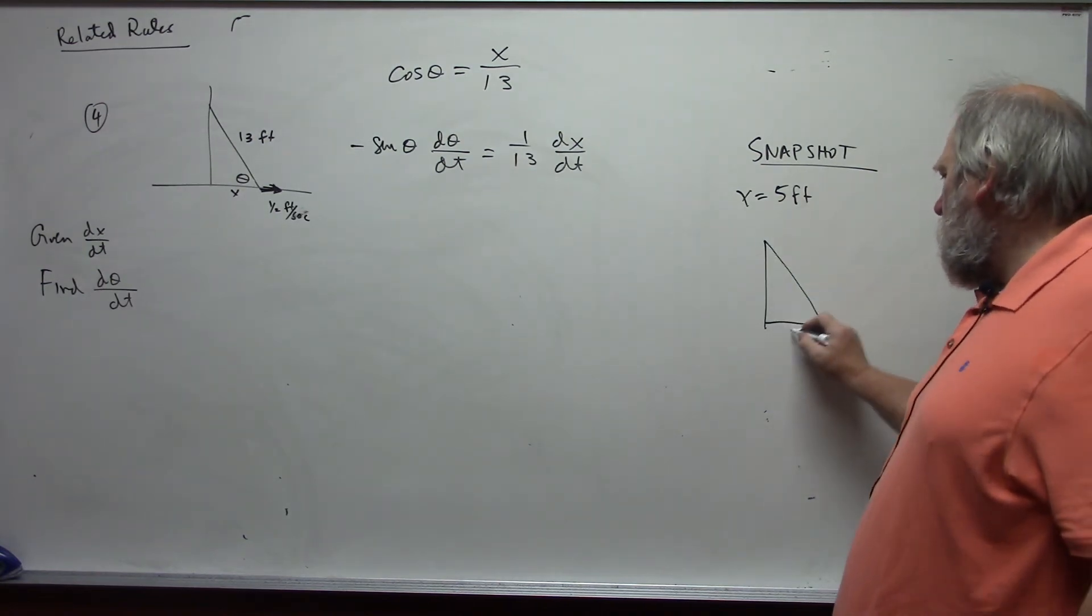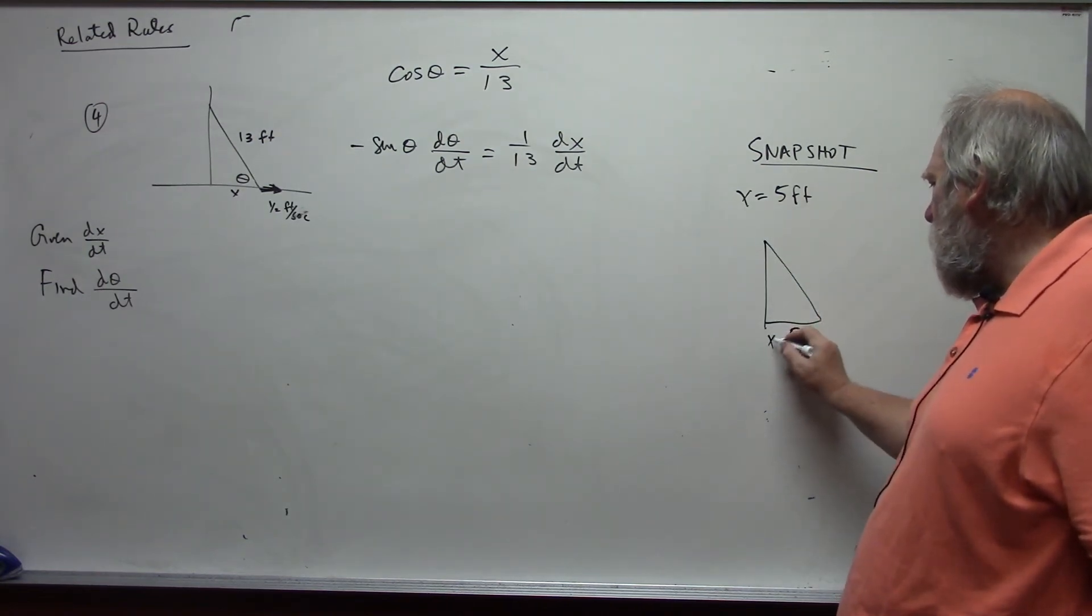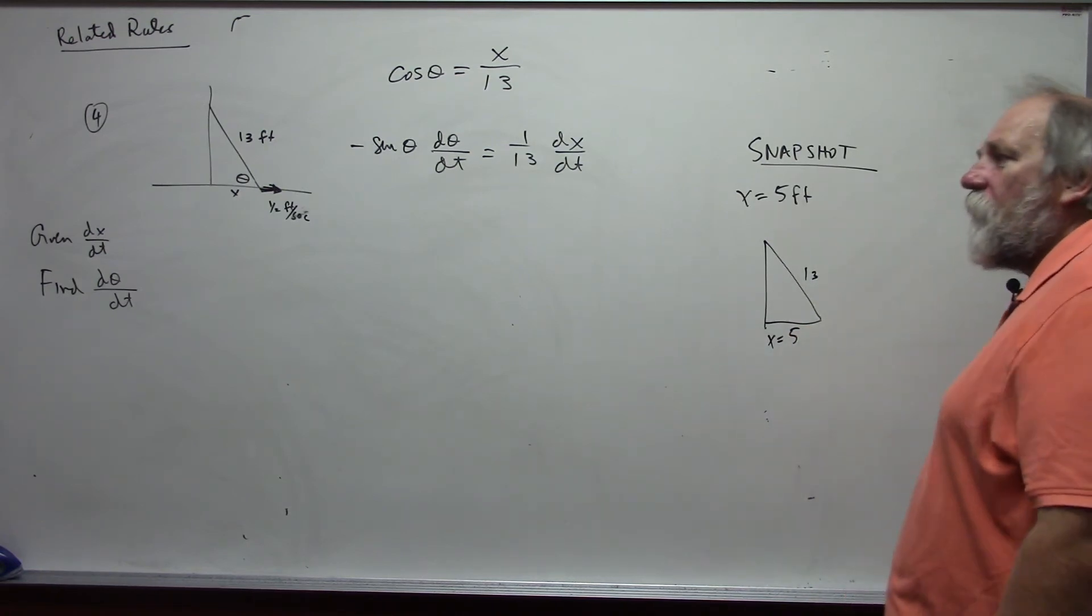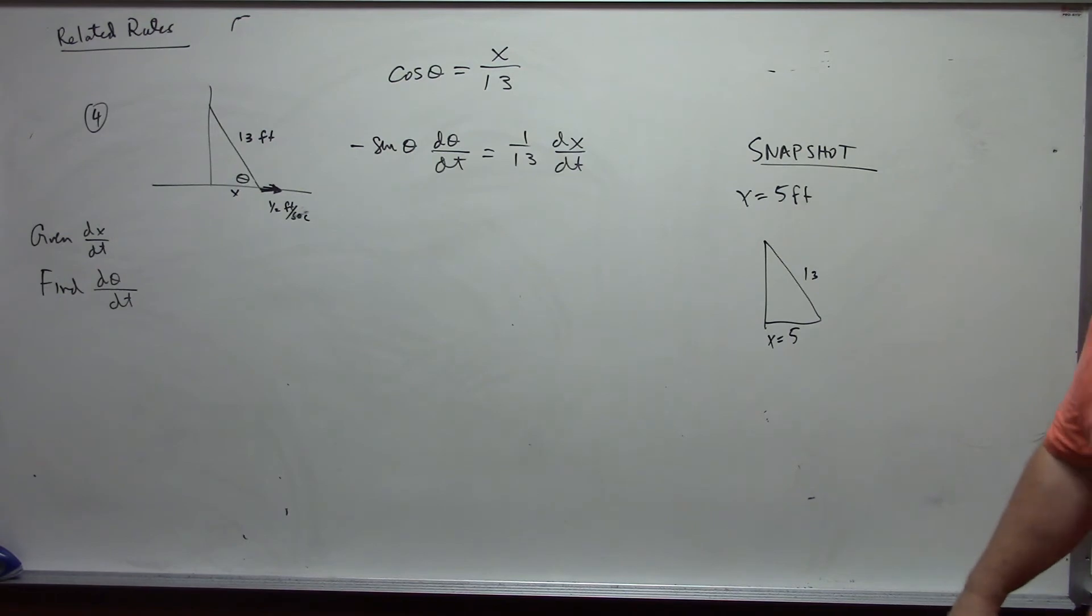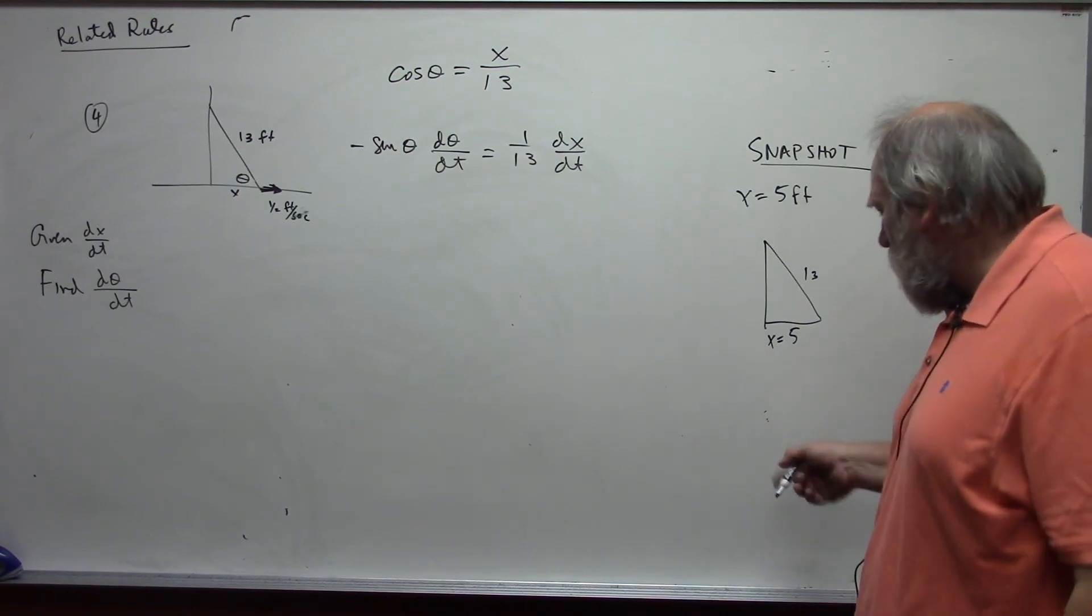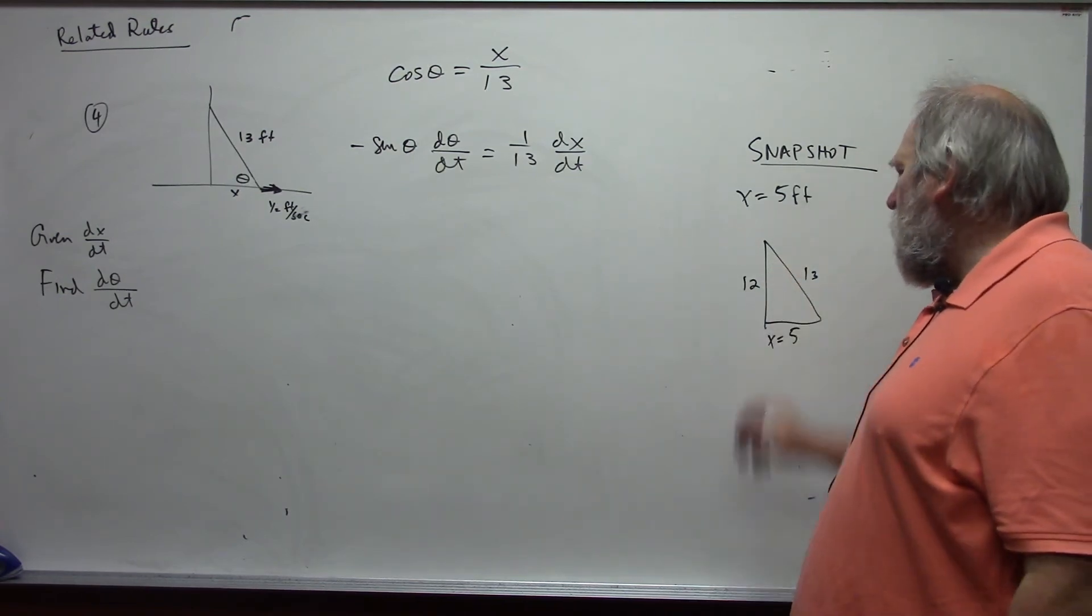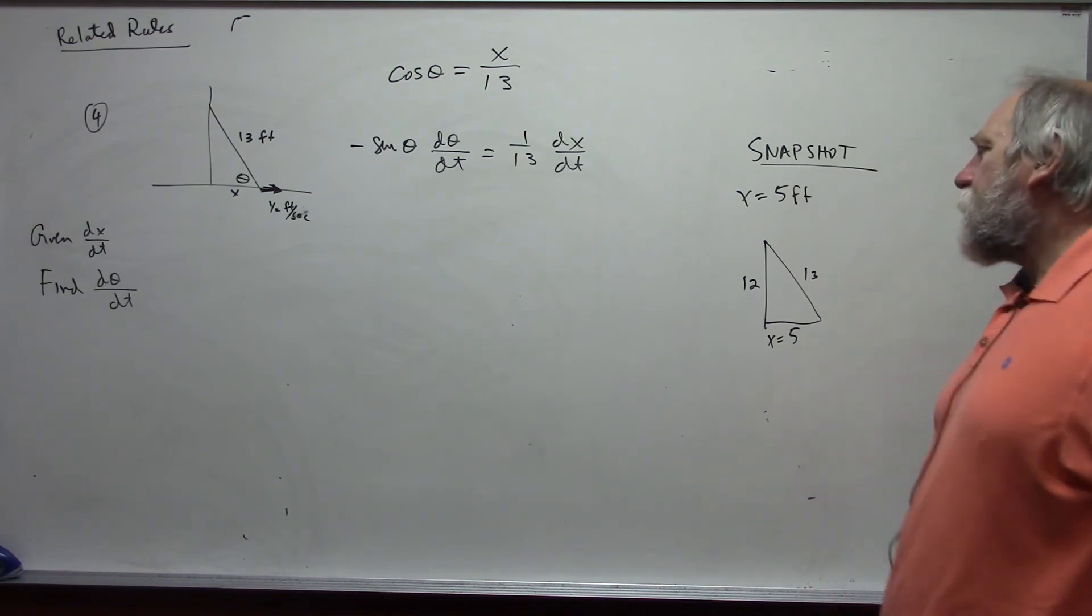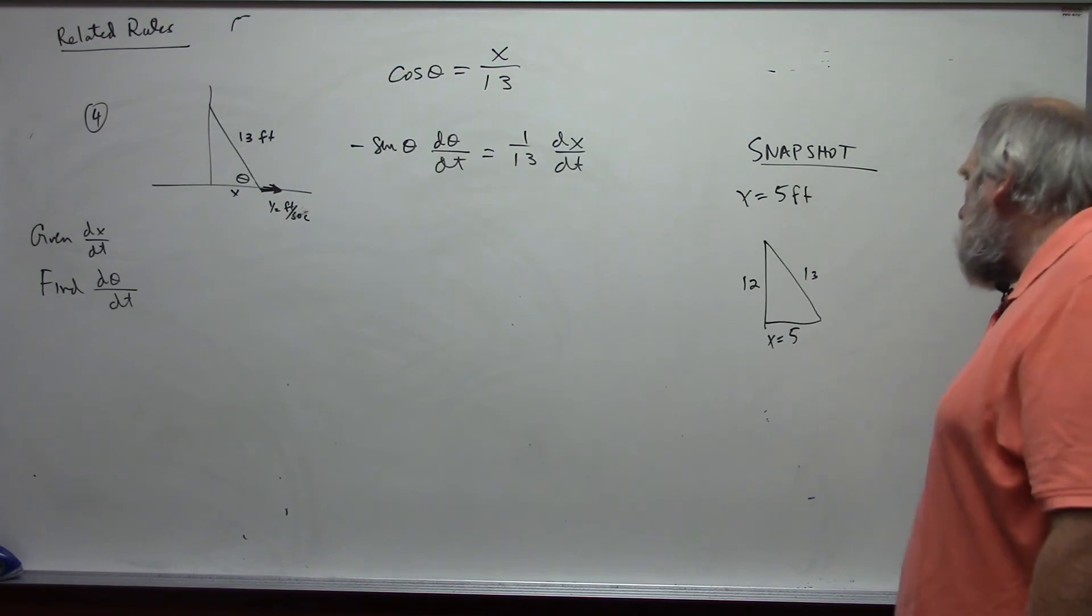So, I'm going to draw a little picture over here again. When x is 5, when x is 5, we know this is 13. And, using the Pythagorean theorem, or you may already recognize, this is a 5, 12, 13. That won't always come out nice. I just made this one nice. But, 5, 12, 13 right triangle.